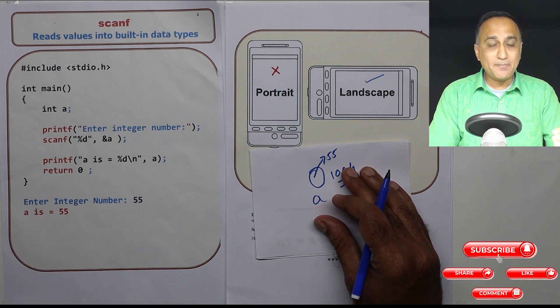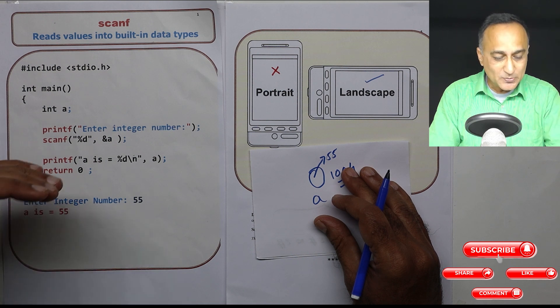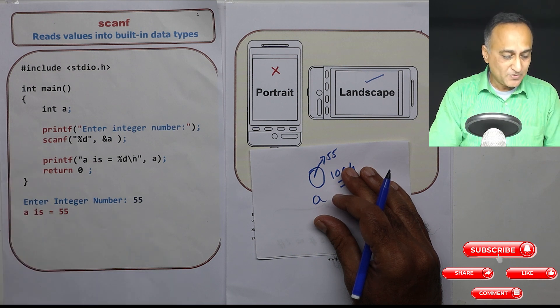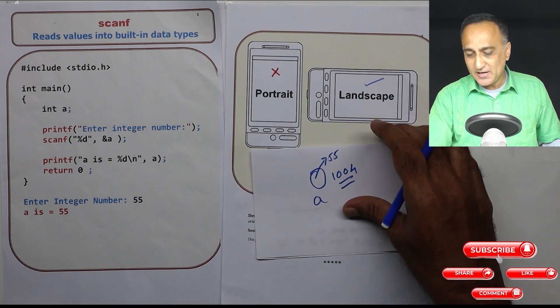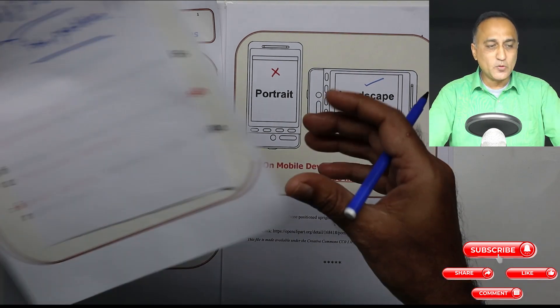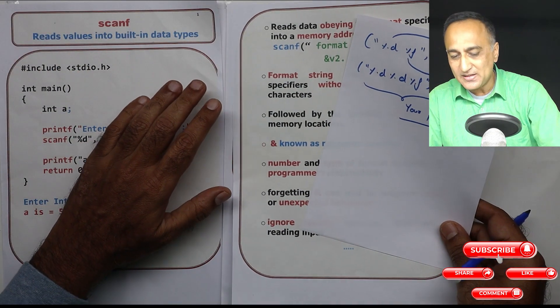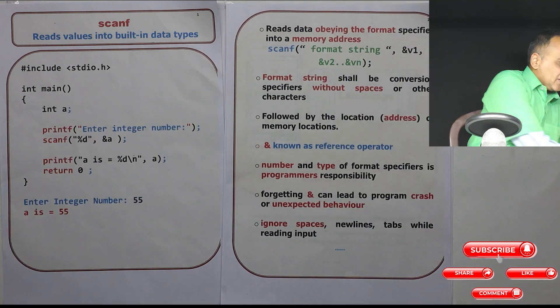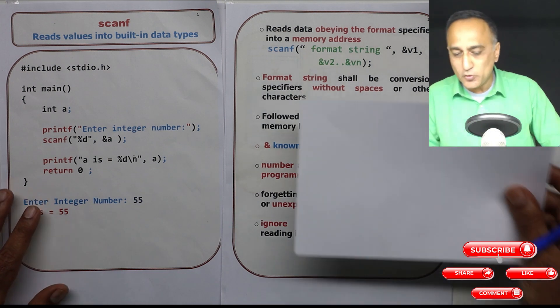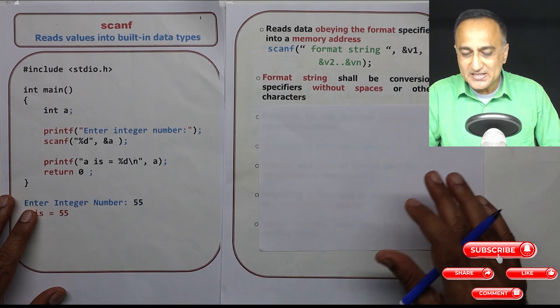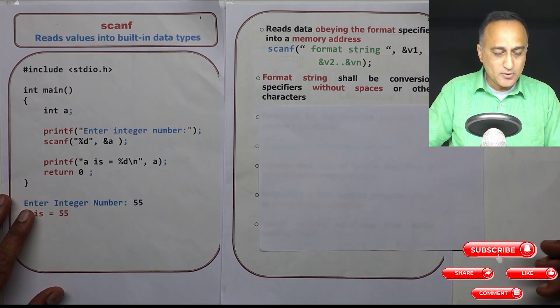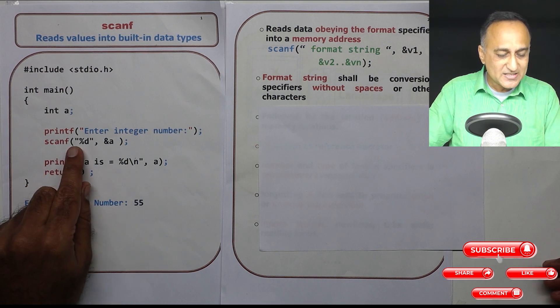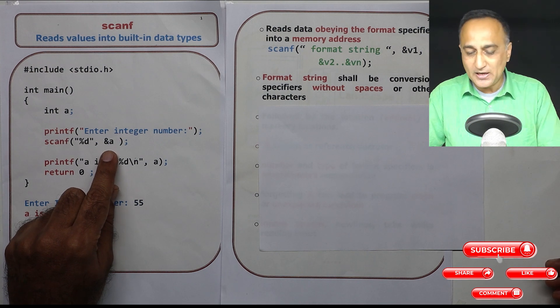So there are a number of things which need to be explained in this particular program. Let's try to create a checklist of those things and let me try to explain what all is happening in this scanf and printf. The first thing you will have noticed is when I am trying to read something from the keyboard or from the input device, I am having scanf something within double quotes and then I am having address of a.